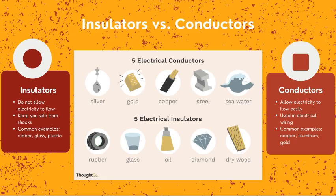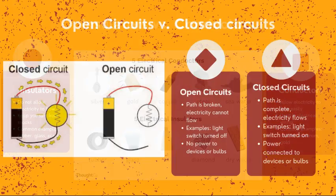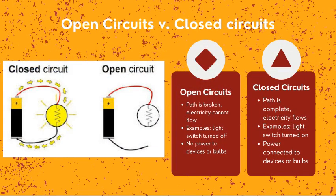Open circuits versus closed circuits: in an open circuit, the path is broken and electricity cannot flow through, like when the lights are off and no power goes to the device or light bulb. A closed circuit is a complete path allowing electricity to flow through easily, like when the light is turned on and power connects to devices.